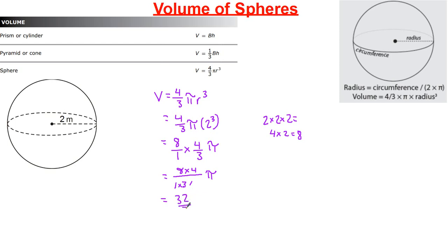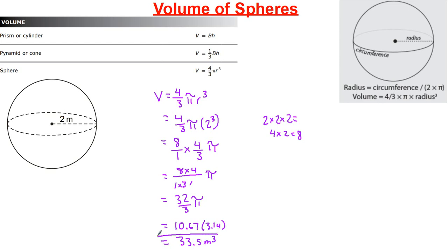Since there's nothing to simplify, we multiply out: eight times four over one times three times pi, giving 32 over 3 pi. It's in fraction form, so dividing 32 by 3 gives about 10.67. Multiplying that by 3.14 gives approximately 33.5 meters cubed. I rounded to the nearest tenth because there was a zero followed by another digit after the decimal.